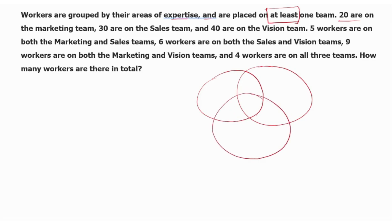So 20 are on the marketing team, 30 are on the sales team, 40 are on the third team. Marketing circle: 20. Sales team: 30.